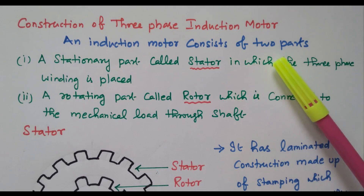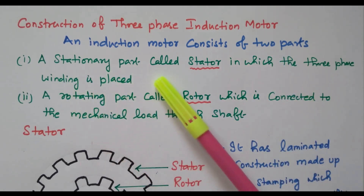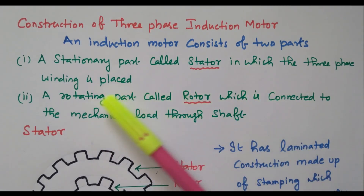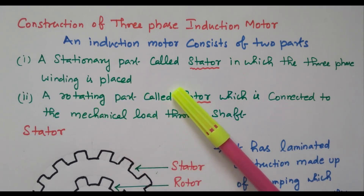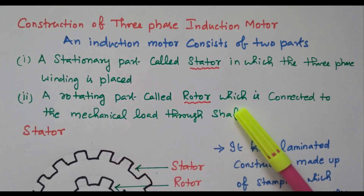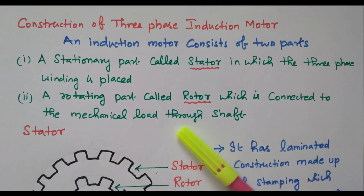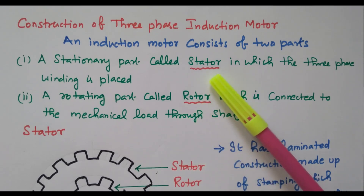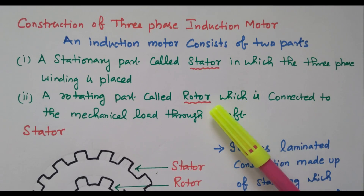This induction motor consists of two main parts. The first one is the stationary part called the stator. The stator is a stationary part in which the three-phase winding is placed. The rotating part is called the rotor, which is connected to the mechanical load through the shaft. This rotor also has windings or copper bars. So mainly we have two parts: stationary part stator and rotating part rotor.